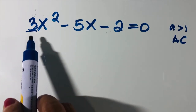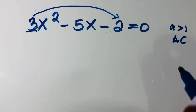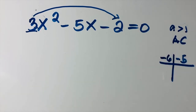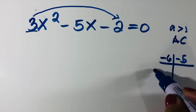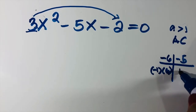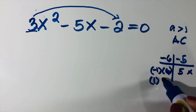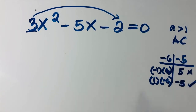Using the AC method, multiply a by c: 3 times negative 2 equals negative 6. The middle term is negative 5, so we need products of negative 6 that give a sum of negative 5. Negative 1 times 6 equals negative 6, but negative 1 plus 6 equals positive 5 — not the pair. Switching signs: 1 times negative 6 equals negative 6, and 1 plus negative 6 equals negative 5. Correct!